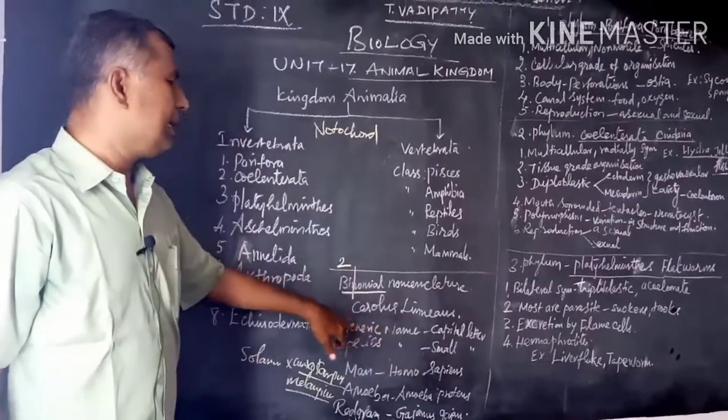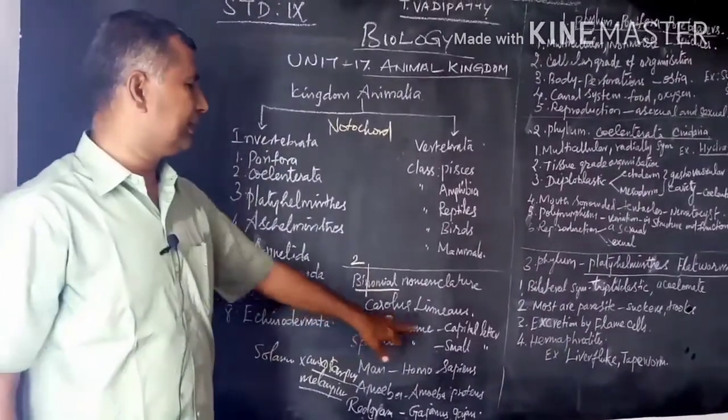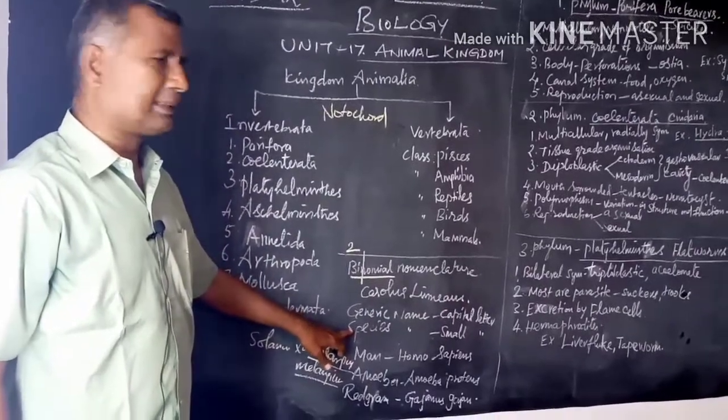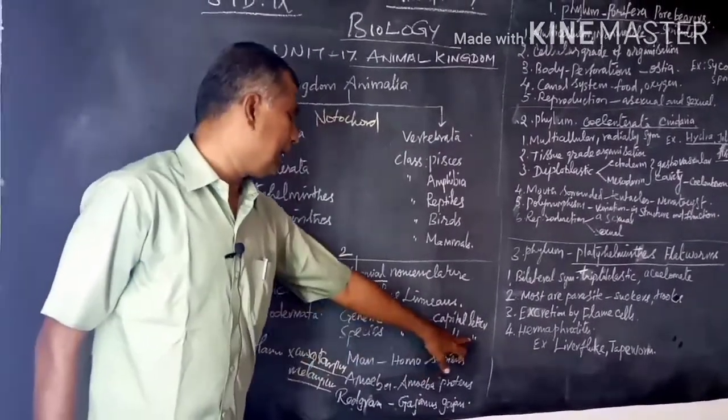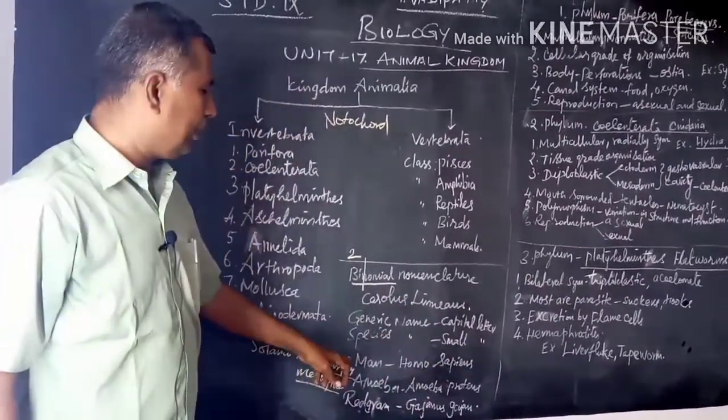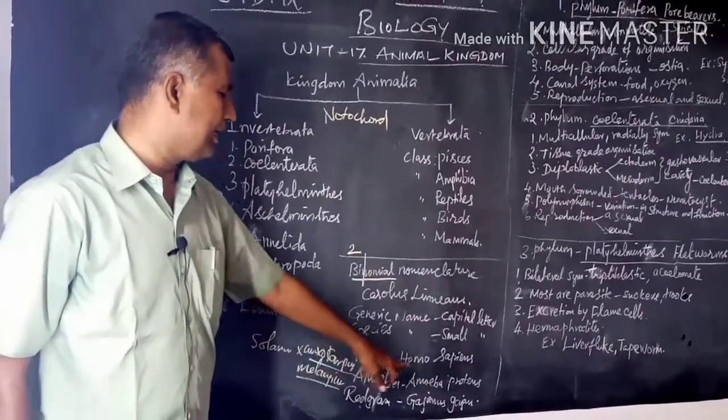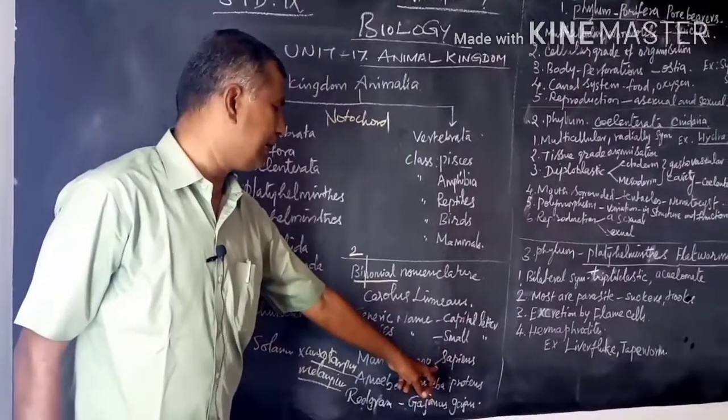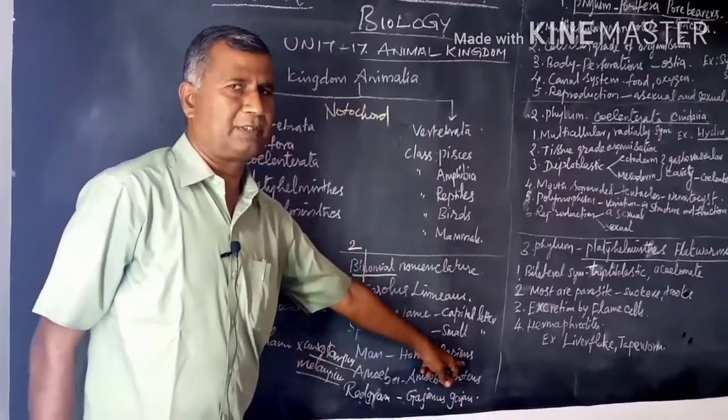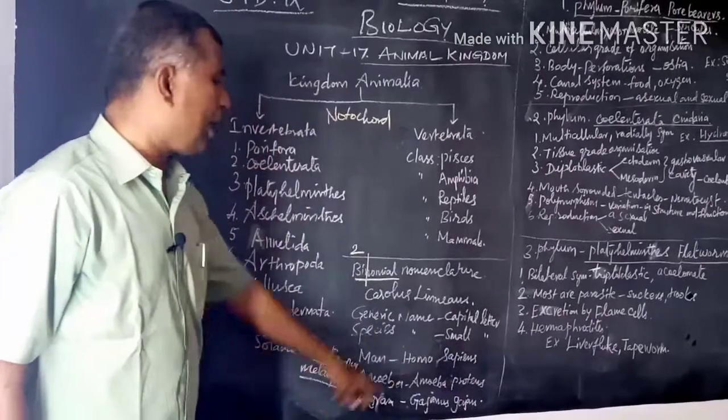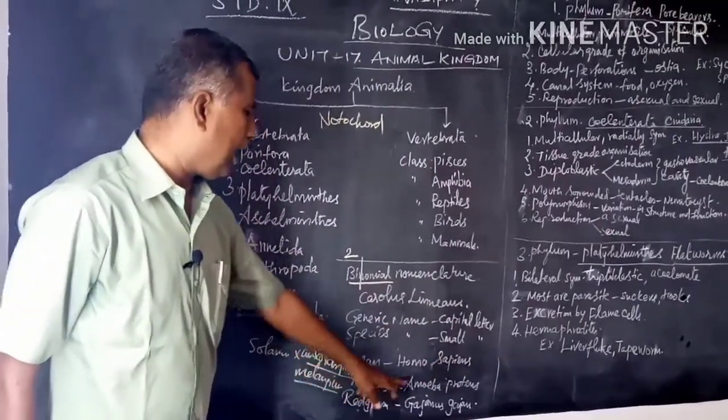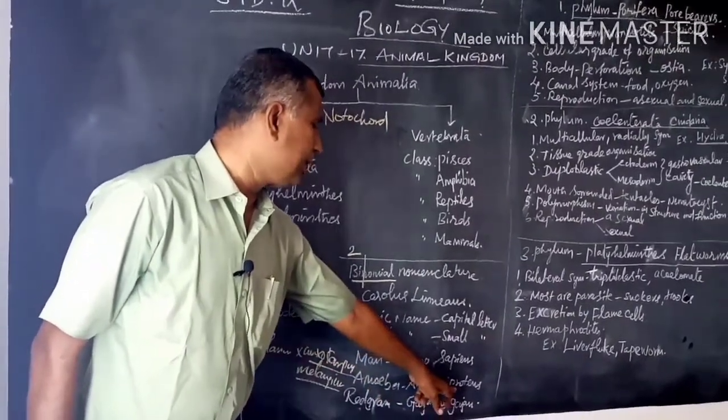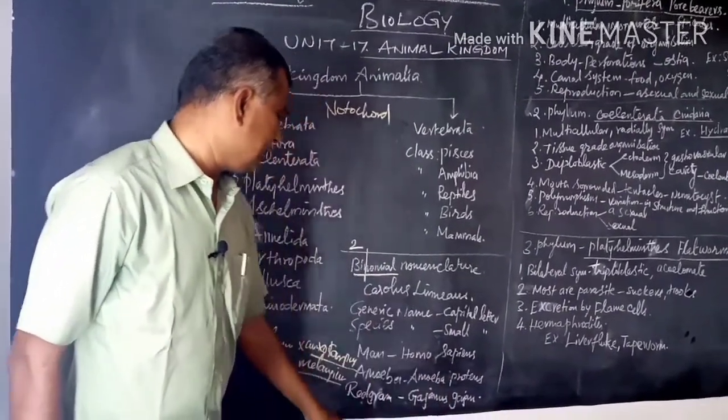The generic name always starts with a capital letter and the species name always starts with a small letter. For example, the name of man is Homo sapiens. Homo refers to the generic name, sapiens refers to the specific or species name. Amoeba proteus – Amoeba is the generic name, proteus is the specific name.